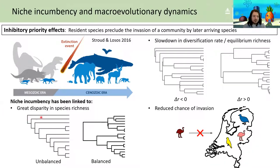Niche incumbency has been linked to three major patterns. First, we would expect a great disparity in species richness with most diversity being concentrated in single lineages rather than being very balanced. Secondly, we would expect slowdowns in diversification rates to occur and eventually the reaching of an equilibrium species richness, and this can be signified by a negative delta r statistic. And lastly, we would expect a reduced chance of invasion with time as niches become filled.